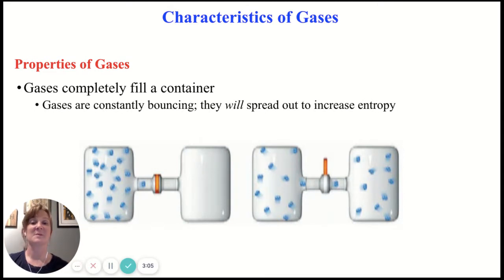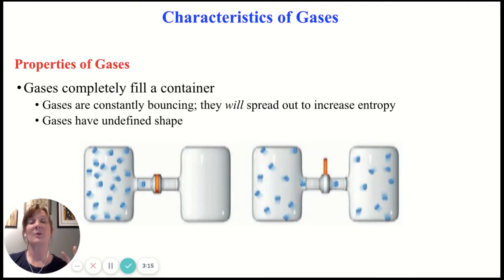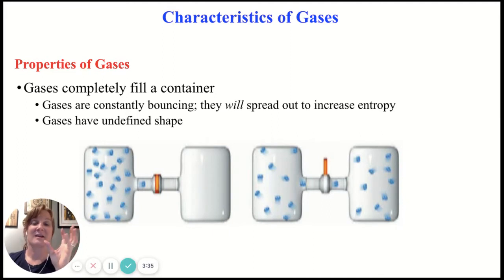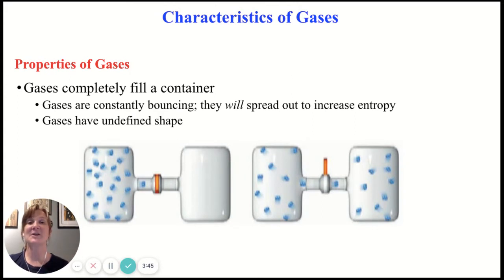If it's a rigid container, that's because gases are constantly bouncing, meaning that gases have an undefined shape. If we're putting gases into something like a balloon with flexible boundaries, the movement of those gases is actually going to define the shape of that balloon. The more you blow into a balloon, the bigger it gets because you're filling up that flexible space with more molecules. If it's a rigid container, the volume of our gas will be equal to whatever the volume of that rigid container is.